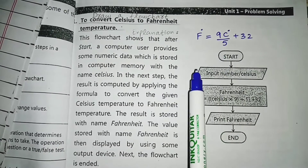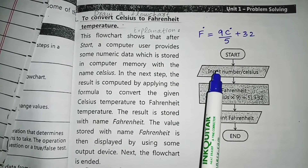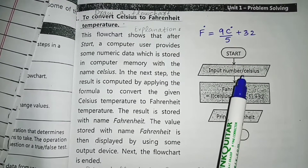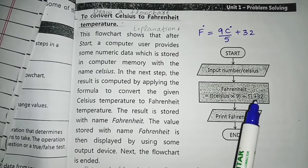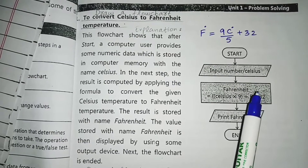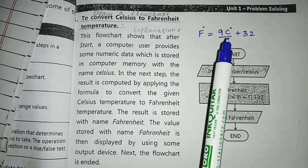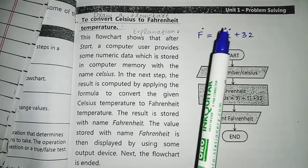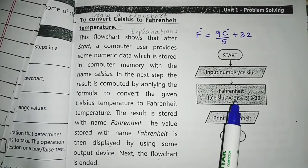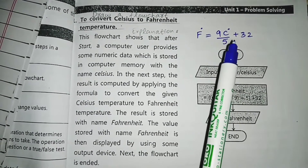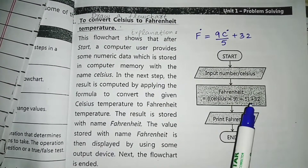This is the flowchart. After the start oval, the parallelogram input symbol is used to enter the Celsius temperature. Next, a rectangle shows the processing step — the formula is applied: Fahrenheit = Celsius × 9 ÷ 5 + 32. The value of C is substituted into the formula and the Fahrenheit temperature is calculated.